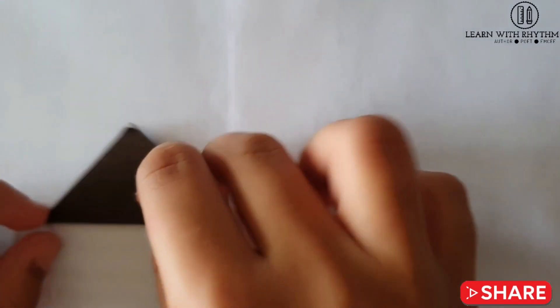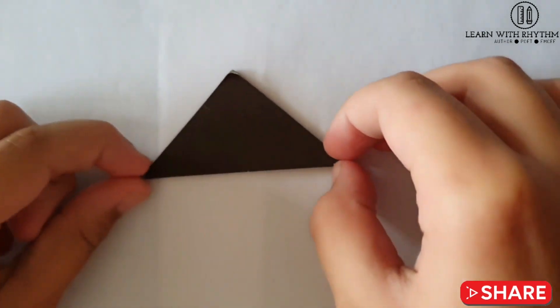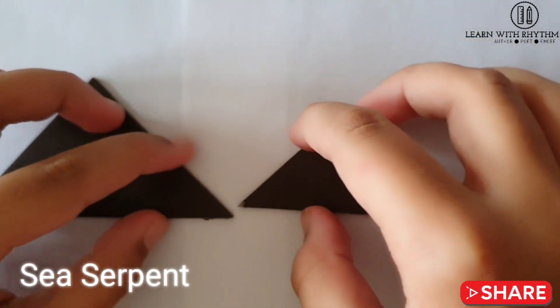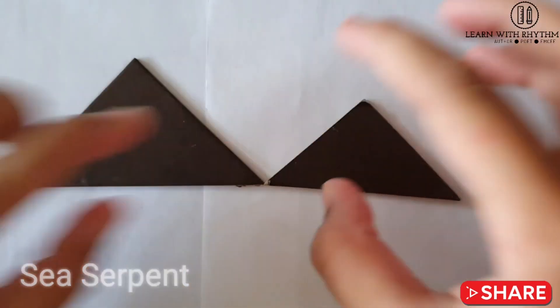Now let's start our sea serpent. First we take this small triangle and put it here. Then we take our big triangle and put it here to form its body.